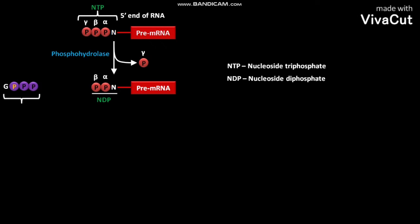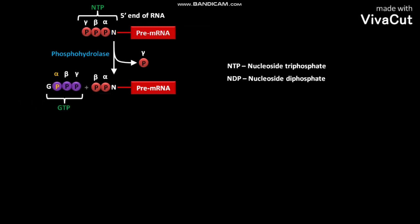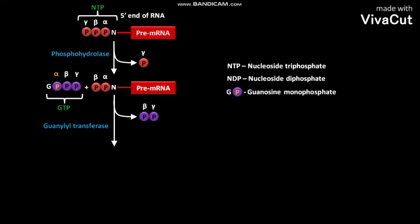The cellular GTP contains an alpha-phosphate, a beta-phosphate, and a gamma-phosphate. The GTP then binds with the NDP of pre-mRNA. In the next step, in the presence of guanylyl transferase, the removal of beta and gamma-phosphates of GTP occurs, and the remaining guanosine monophosphate is added to the NDP of pre-mRNA.